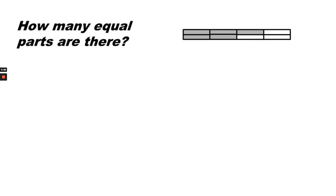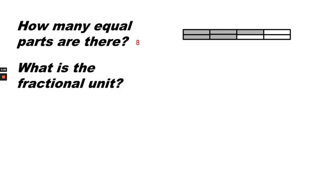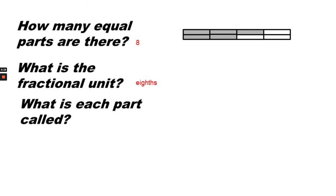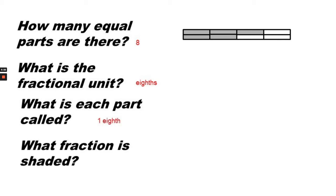How many equal parts are there? There are eight equal parts. What is the fractional unit? The fractional unit is eighths. What is each part called? Each part is called one eighth. What fraction is shaded? Five eighths are shaded.